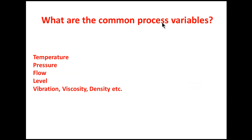What are the common process variables? The common process variables are temperature, pressure, flow, level, vibration, viscosity, density, etc. The SI unit of temperature is Kelvin — sometimes asked in exams. The SI unit of pressure is Pascal. The SI unit of flow is meter cube per second.